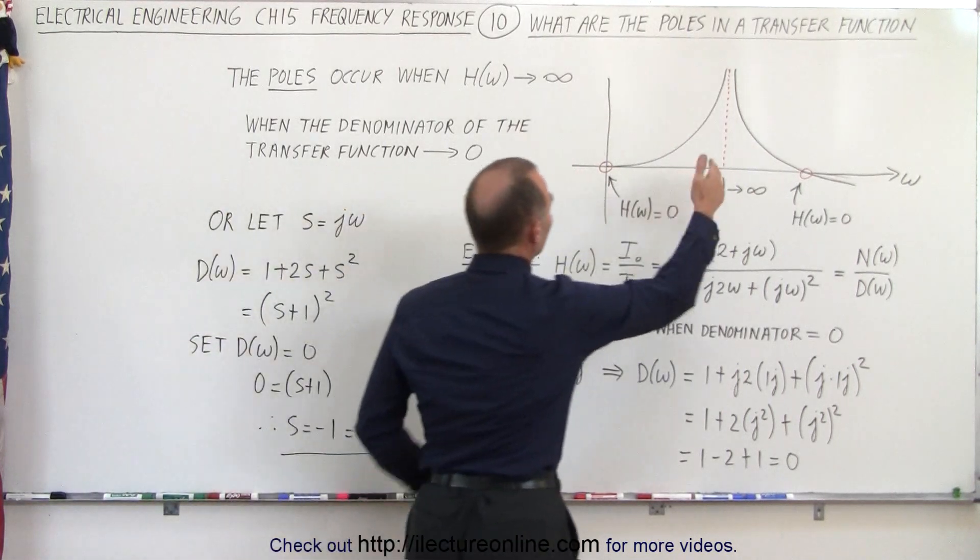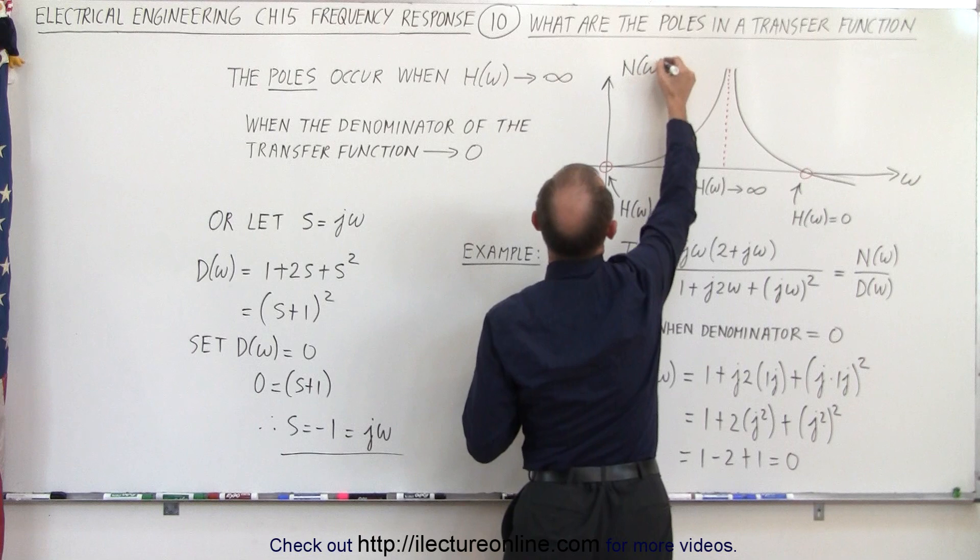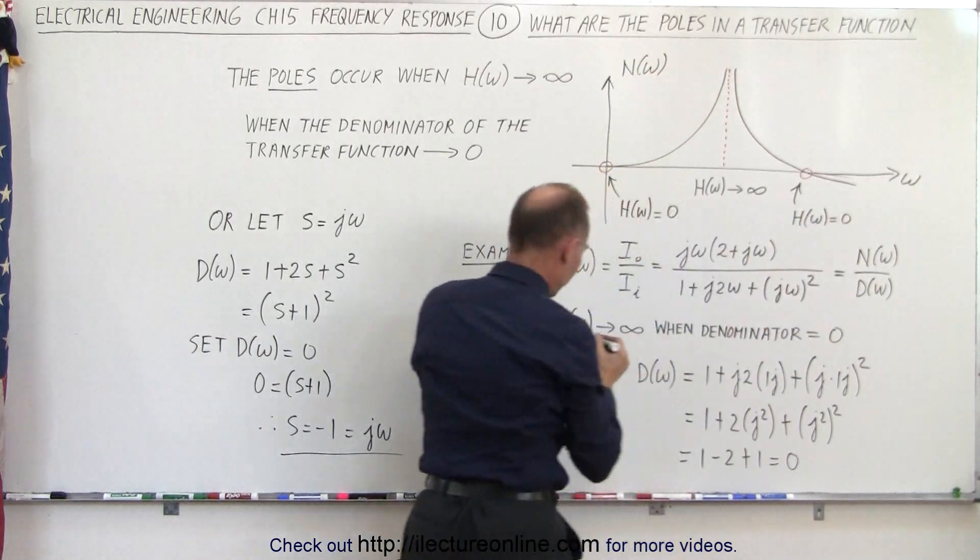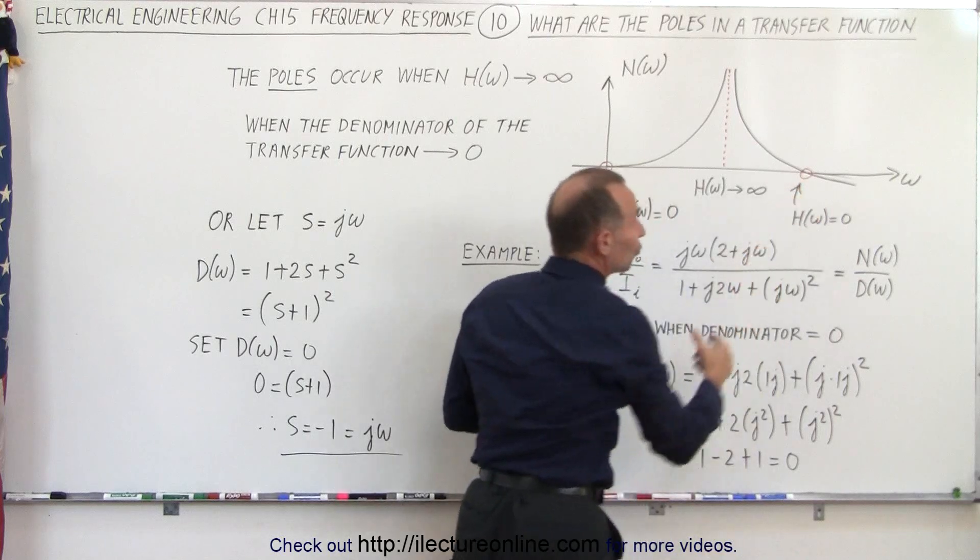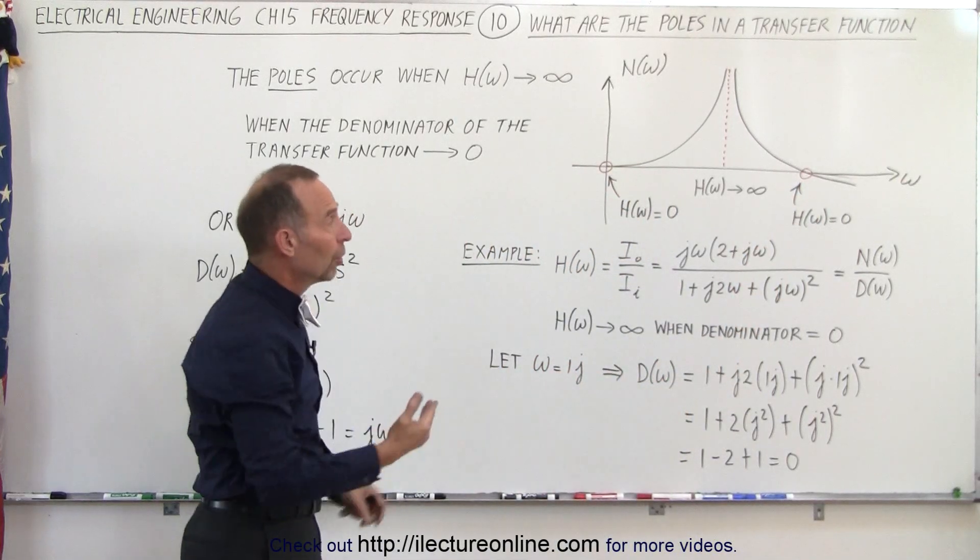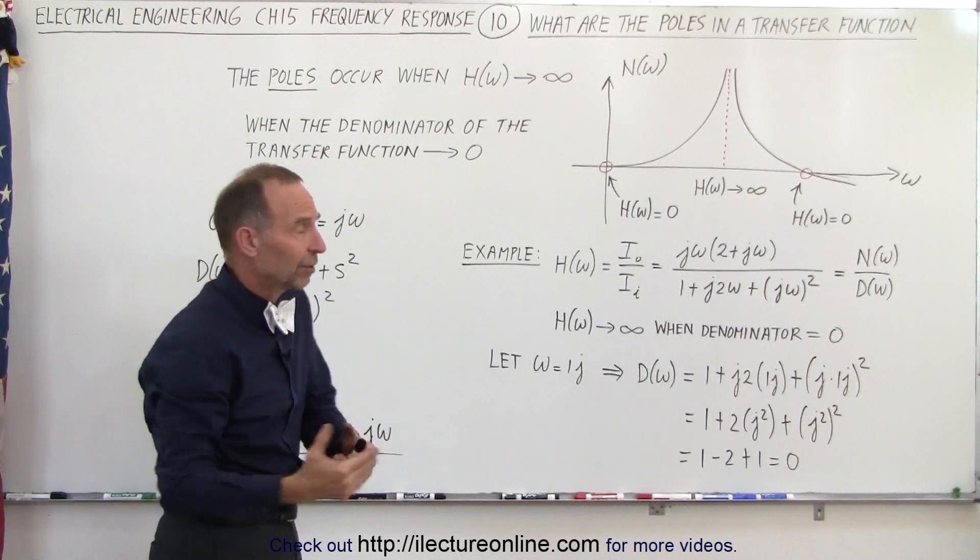So here we have a graphical representation of that. The vertical axis could be the transfer function and the horizontal axis is the frequency. Notice as we did before, there will be cases where the transfer function will be equal to zero, which occurs when the numerator becomes equal to zero for some particular value of the frequency.